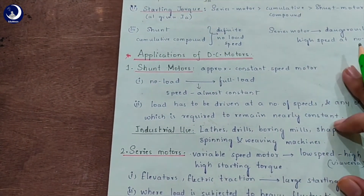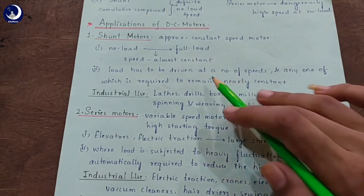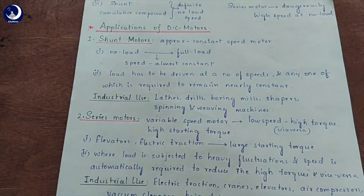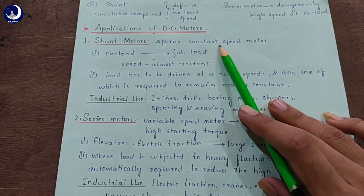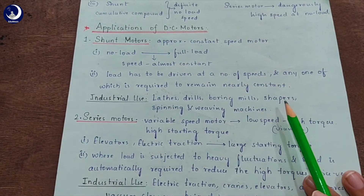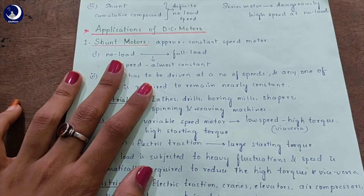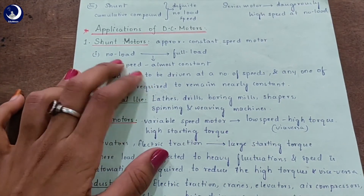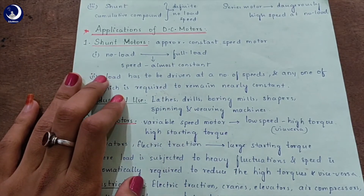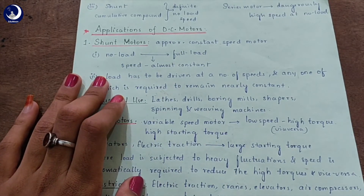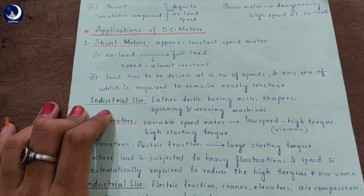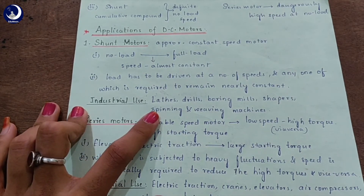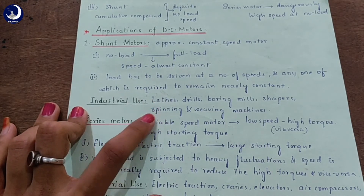Let us see some applications of DC motors. Shunt motors are approximately constant speed motors, so they are used where the speed is required to remain almost constant from no load to full load, and where the load has to be driven at a number of speeds, any one of which is required to remain nearly constant. The industrial uses of DC shunt motors are in lathes, drills, boring mills, shapers, and spinning and weaving machines.